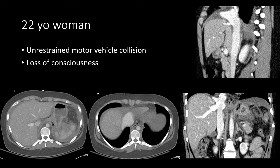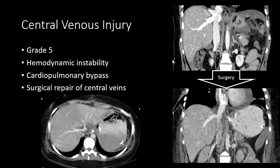A 22-year-old woman, not wearing a seatbelt, became unconscious at the scene. In this case the liver looks relatively intact — there is a small perihepatic hematoma — but closer inspection of the intrahepatic IVC reveals irregularity and expansion of the vessel, which is highly abnormal and indicates a central venous injury, likely disruption of the intrahepatic IVC. This patient required surgery after becoming hemodynamically unstable following aggressive resuscitation. They were placed on cardiopulmonary bypass and their central veins were repaired primarily.